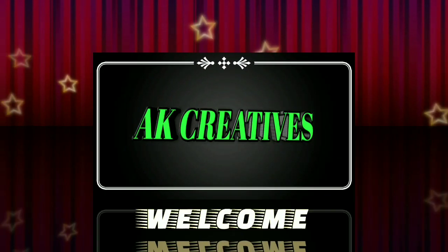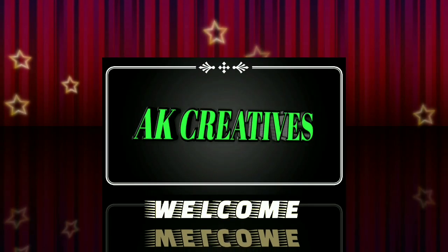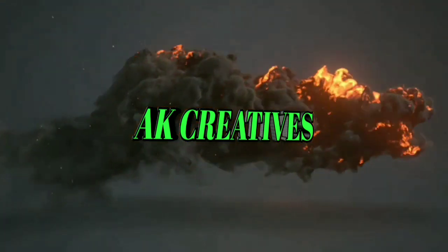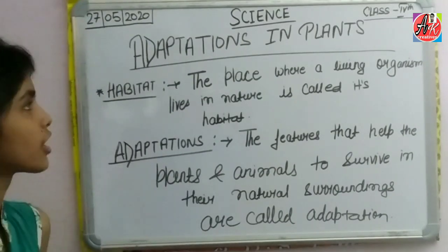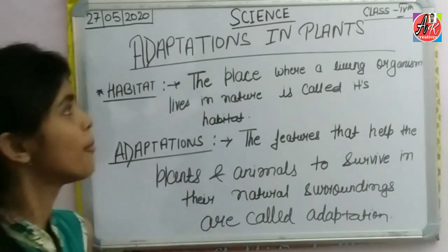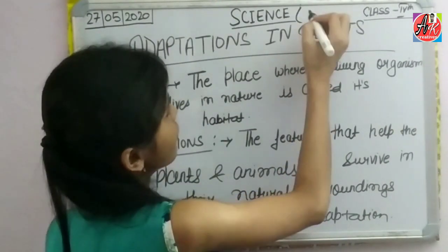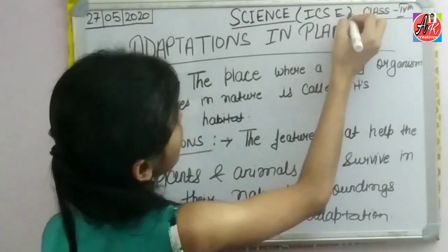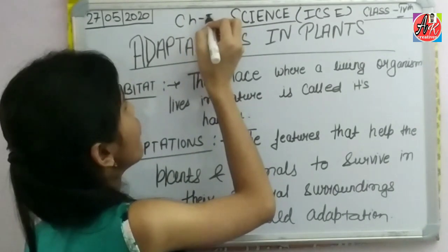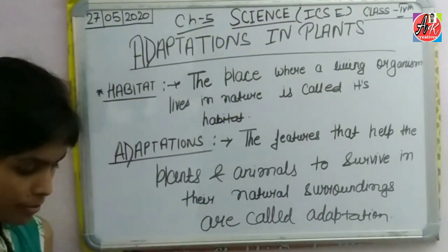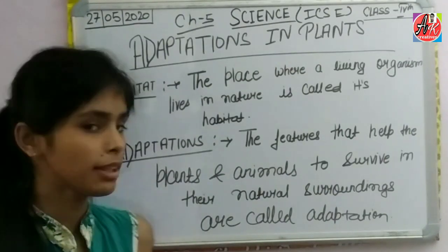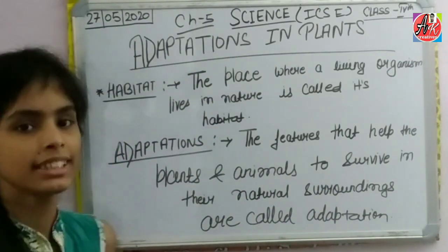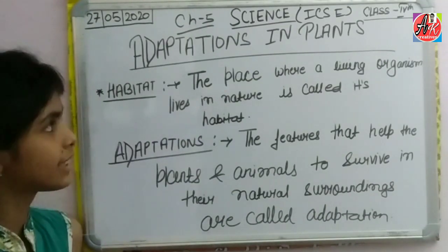Hello friends, I am watching Classboard Science ICSE Board Chapter 5. Chapter 5 is named Adaptation in Plants. In this chapter, we discuss how plants survive in their surroundings.